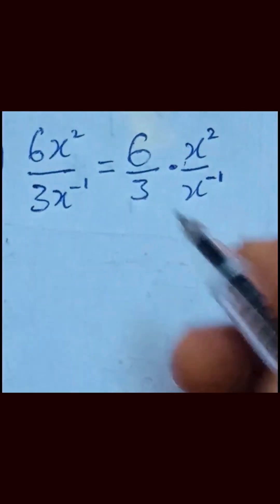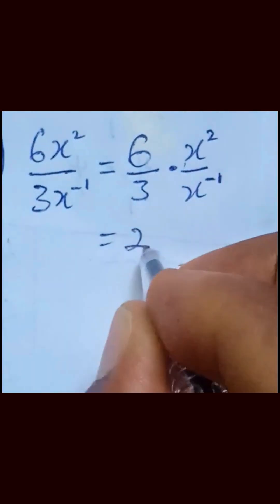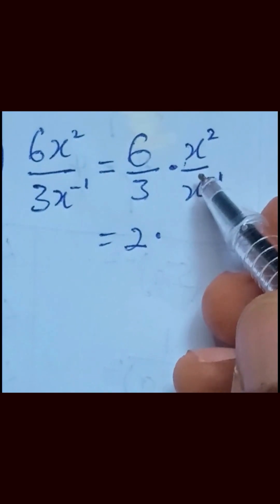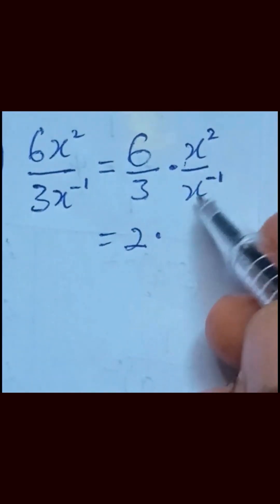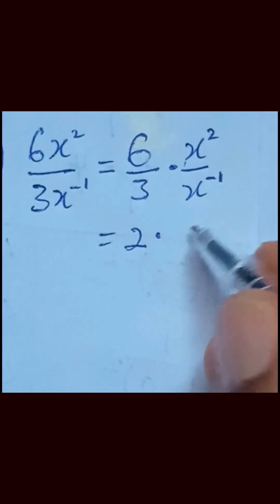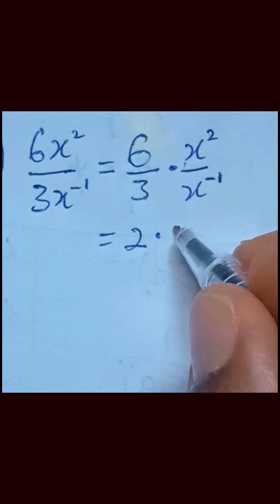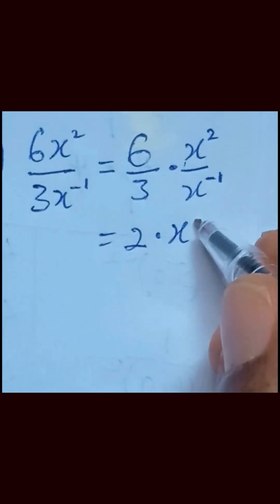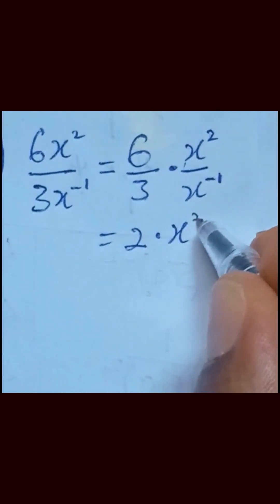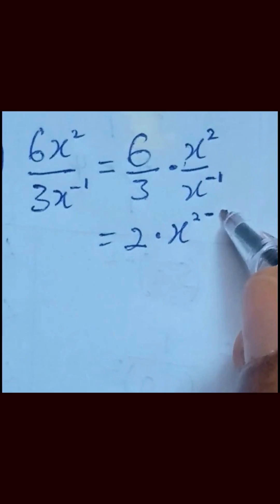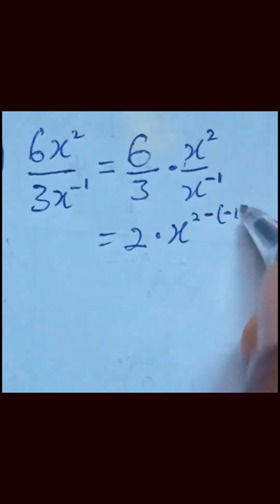Divide this. We have 2 multiplied by — then we express this in the multiplication form. We now have this to be equal to x power 2 subtract by the power of x power minus 1.